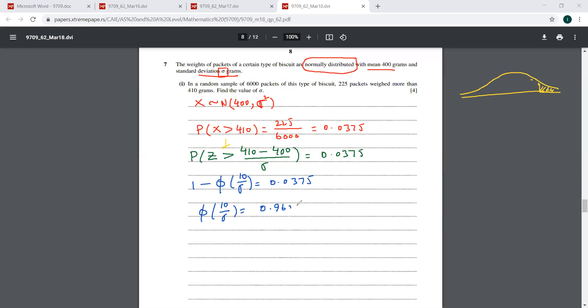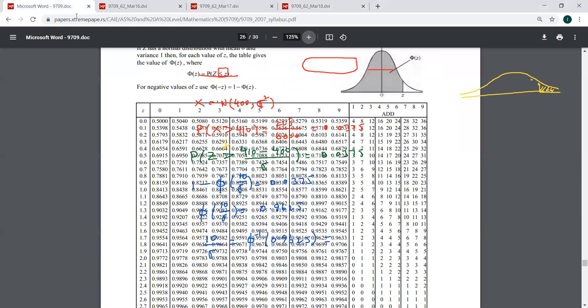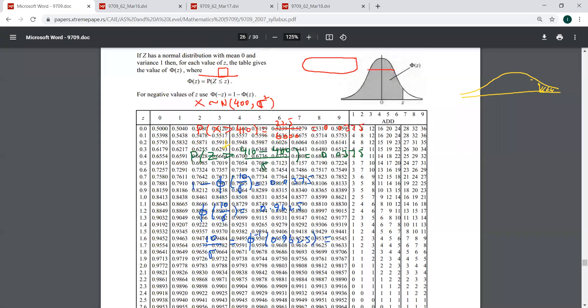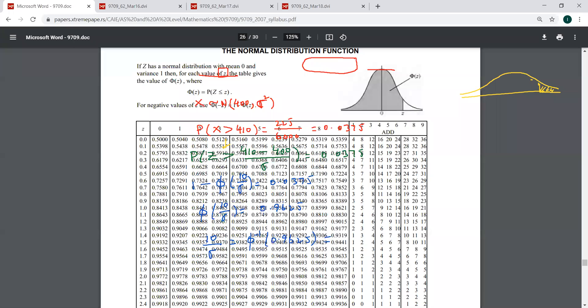So this 10 over sigma is going to be phi inverse of 0.9625. And we have to go to the table now, guys. There's the table, 0.9625. So it is exactly here. This is 0.9625.